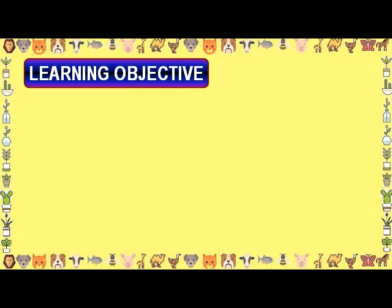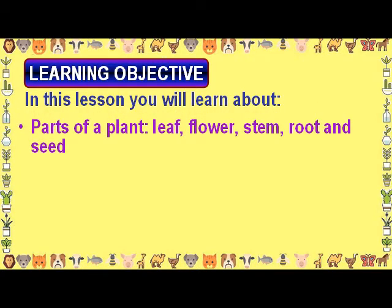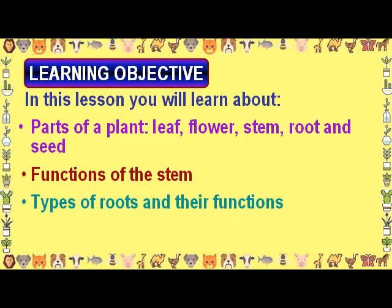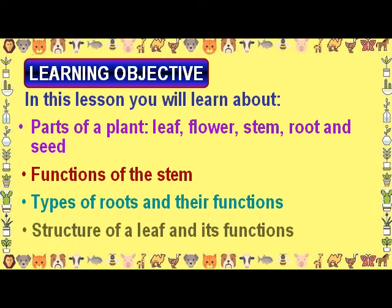Learning Objective: In this lesson, you will learn about parts of a plant — Leaf, Flower, Stem, Root, and Seed — as well as the functions of the stem, types of roots and their functions, and the structure of a leaf and its functions.